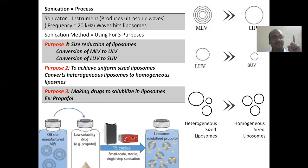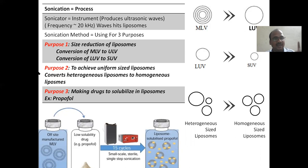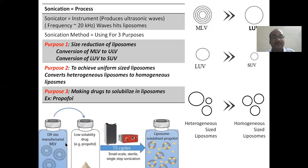Sonication is used for three purposes. Purpose one: to convert multilamellar vesicles into large unilamellar vesicles, and to convert large unilamellar vesicles to SUV. Purpose two: to get a uniform-sized, homogeneous-sized liposome from a heterogeneous-sized liposome. Purpose three: making solubilization of various drugs like propofol. Propofol has low solubility — you take the MLV, go for sonication, and you will get liposomes in which the drug is now solubilized.